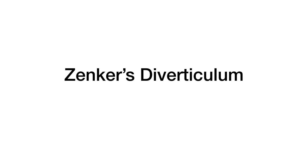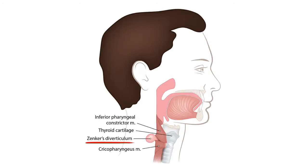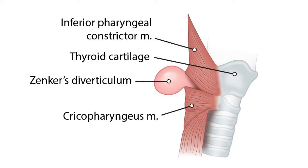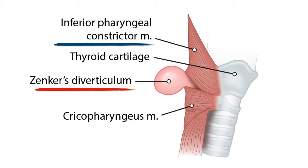Let us talk about Zenker's diverticulum. This diverticulum happens at the upper part of the esophagus, just as the endoscope tries to get into the esophagus. This is a pulsion diverticulum, meaning the diverticulum happens as an outpouching of the mucosa in between two layers of muscle wherever there is weakness — specifically between the inferior pharyngeal constrictor muscle and the cricopharyngeus muscle.